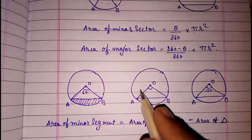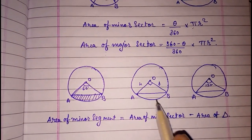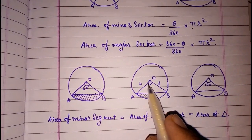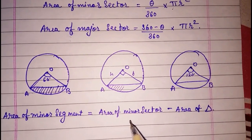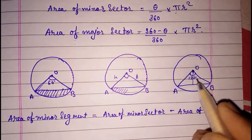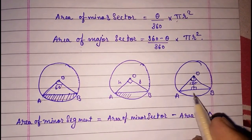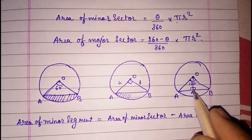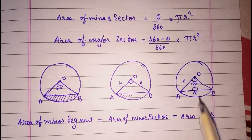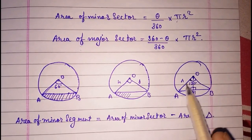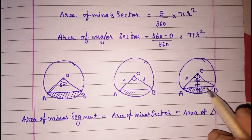For 90 degrees, it is a right-angled triangle, so one radius is the height and the other is the base. Find the area of the sector, then subtract half into base into height to get the segment area. For 120 degrees, you cannot find the area directly. You have to divide the triangle and draw a perpendicular bisector, giving you 60 degrees on each side. Then use trigonometry with the given radius to find the base and height. Take half into height into base for the triangle area, then subtract from the sector to get the segment area.